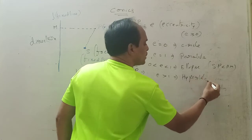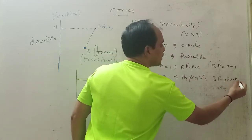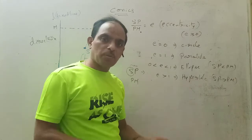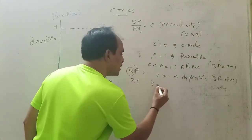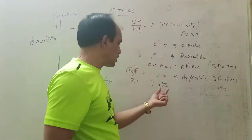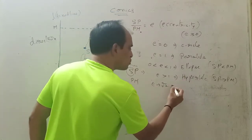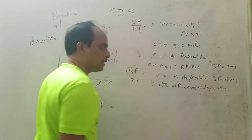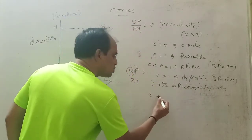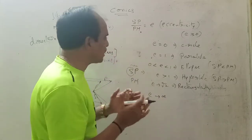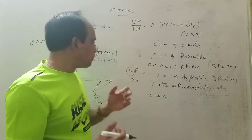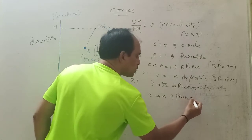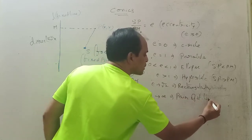If e > 1, the conic becomes a hyperbola — the distance SP (between points) is greater than the perpendicular distance PM. There are also special cases: if e tends to √2 (approximately 1.41), it becomes a rectangular hyperbola. If e tends to infinity, PM becomes very small, and the locus is a pair of straight lines.